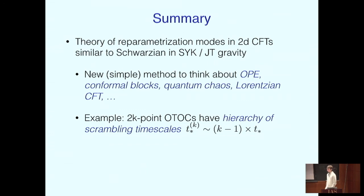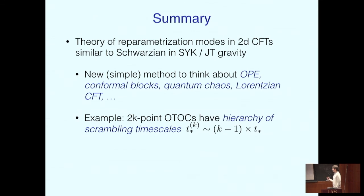To summarize, you can formulate a theory very similar to the Schwarzian theory in two-dimensional CFTs, which is again a theory of reparametrization modes. This theory is useful in that it allows you to calculate statements about the identity block, quantum chaos, and all the effects that come from the OPE in a very simple way. The second main point is this example about out-of-time-order correlation functions with more insertions displaying a hierarchy of scrambling time scales — they are sensitive to some more fine-grained version of quantum chaotic scrambling of information.